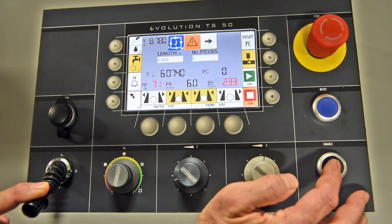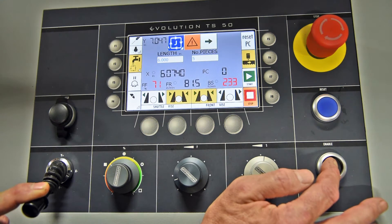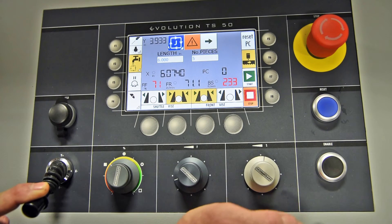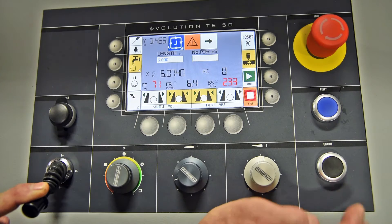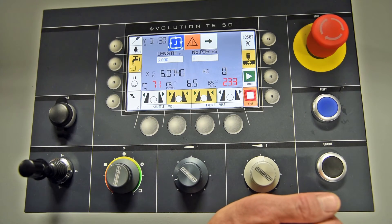If you would like to increase it, you would push your enable, it starts to go down fast. Once you get close, just release the enable button, and it starts to feed slow again. So we want it probably about a quarter inch less or above our material.